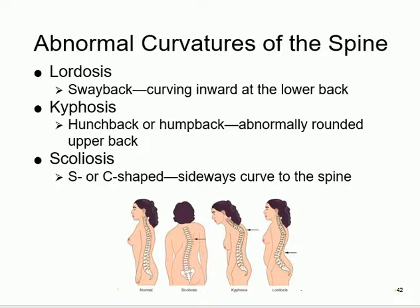Reviewing spinal deformities: kyphosis is a forward bending of the back. Lordosis is the opposite - a backward curve, like standing with the chest and belly forward. The name 'lordosis' comes from the posture of lords in British parliament who would stand very upright and proud. Scoliosis is a side-to-side curvature.